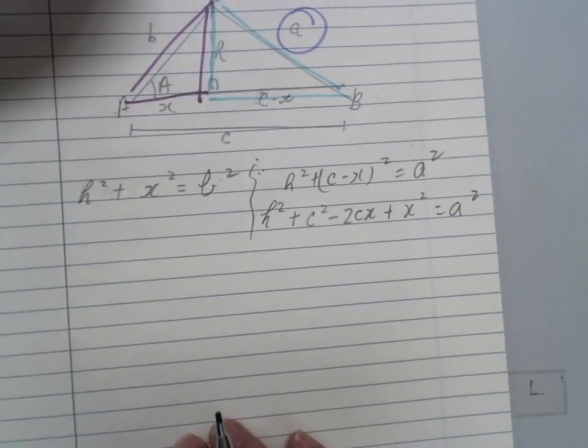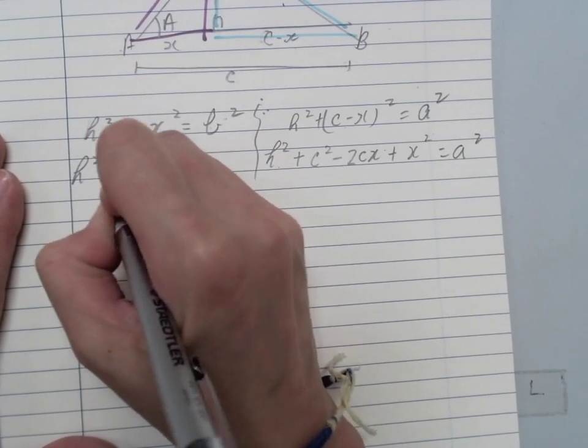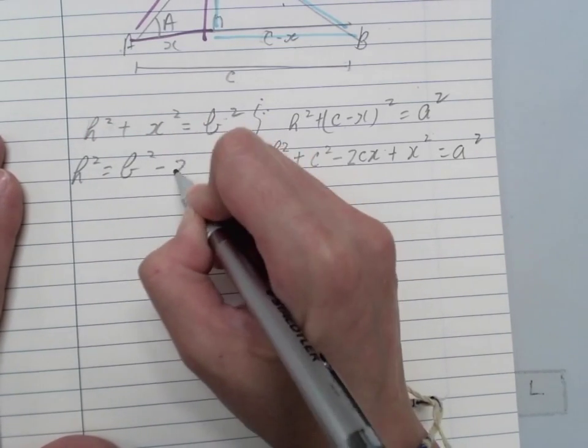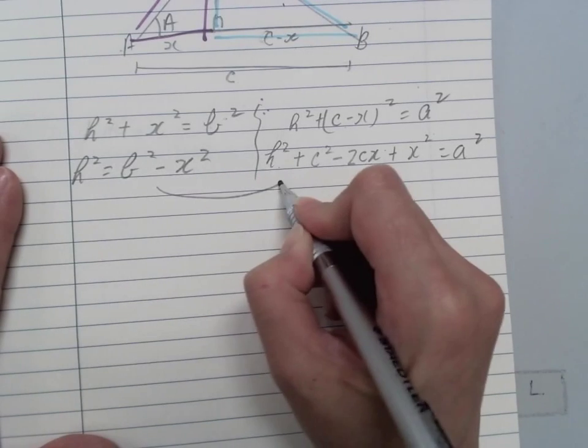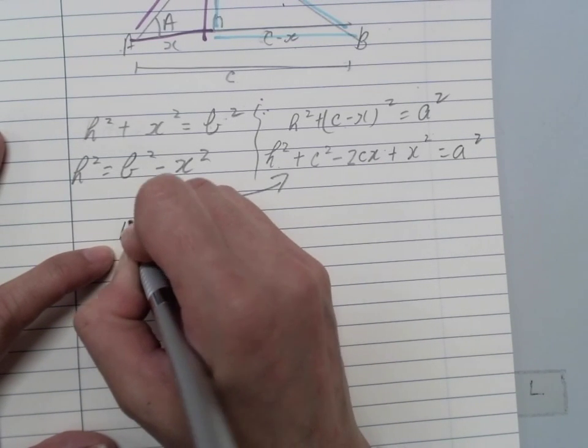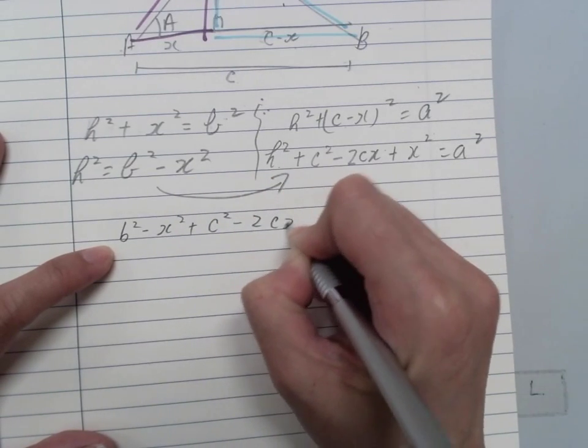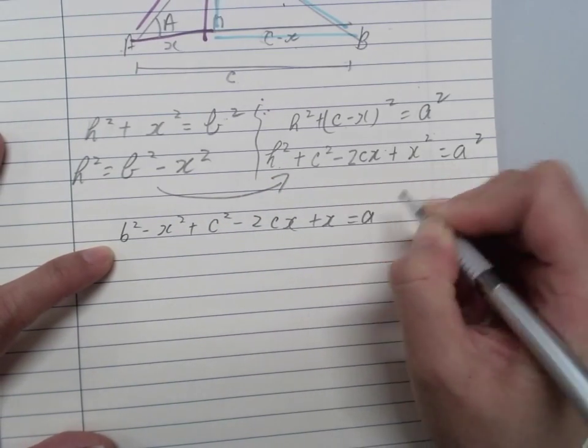All right, and then to further elaborate, I will want to remove the H. So H² = B² - X². If I substitute this one over, I will get B² - X² + C² - 2CX + X² = A².